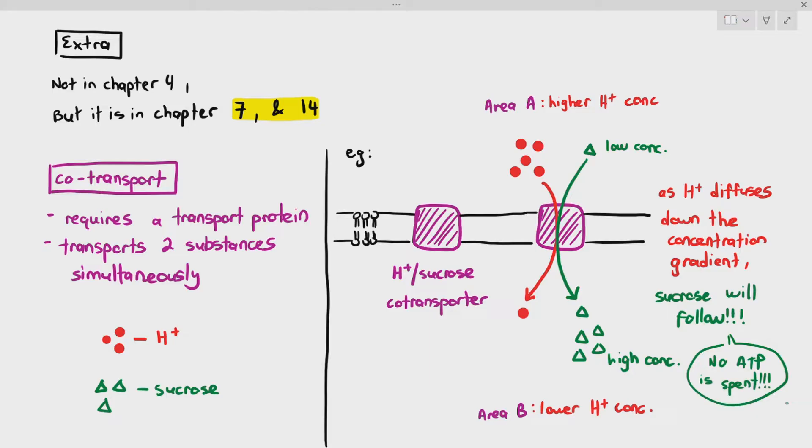So, you do not need to know co-transport in detail. What I just want you to understand about co-transport is the fact that there are transport proteins that can transport two substances simultaneously, but they will just follow the concentration gradient of one of the particle. In this case, in the hydrogen ion sucrose co-transporter, it only follows the concentration gradient of hydrogen ions. So, every time a hydrogen ion diffuses through it, down the concentration gradient, a sucrose molecule automatically follows, and no ATP is spent whatsoever.